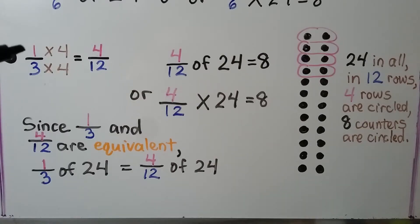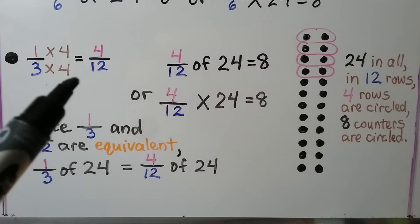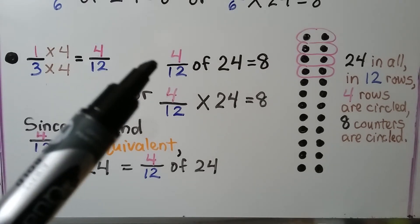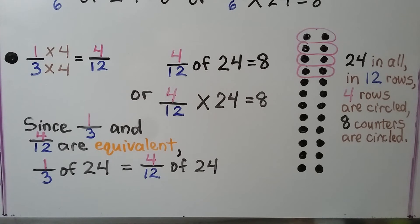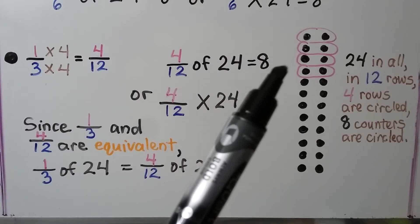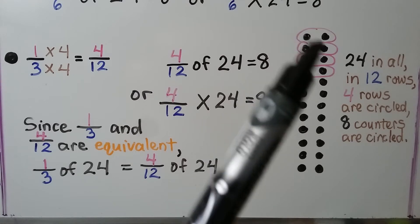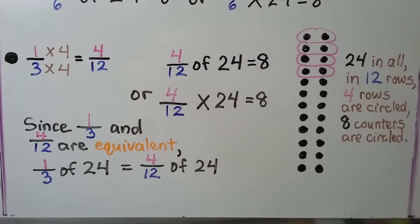If we multiply the numerator and denominator times 4, we'll get the equivalent fraction four-twelfths. Four-twelfths of 24 is also equal to 8, so four-twelfths times 24 is equal to 8. We make 12 rows, we circle 4 of them, and there are 8 counters circled in those 4 rows. Since one-third and four-twelfths are equivalent, one-third of 24 is equal to four-twelfths of 24.